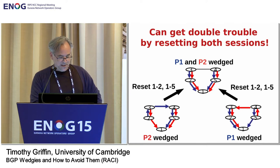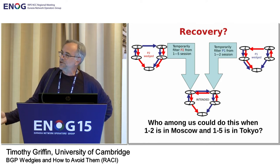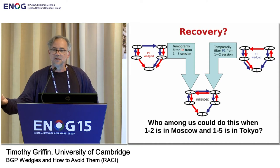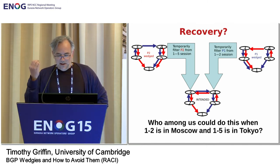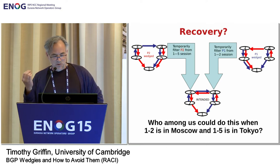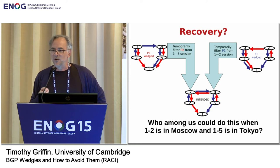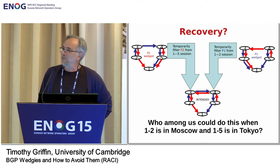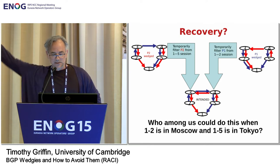So how do you fix this? You can't just bring the whole session down. You've got to filter out those announcements for those prefixes and then bring them back up. Now think about this: who could figure this out and do it properly? Imagine that the one-to-two link is in Moscow and the one-to-five link is in Tokyo, and your network operators in Tokyo don't even talk to your network operators in Moscow. How are you going to figure this out?